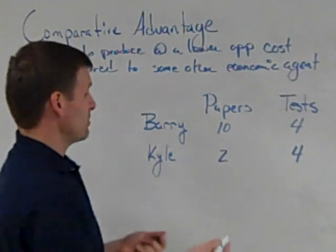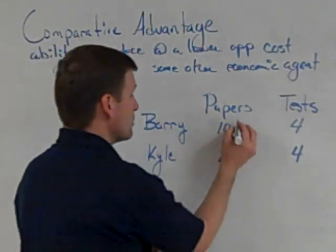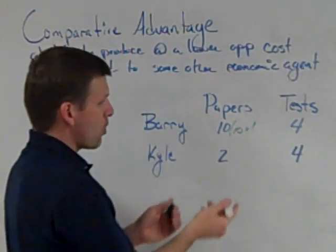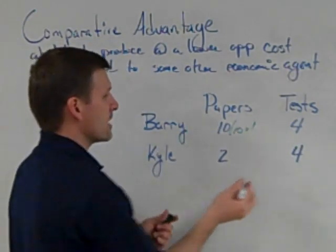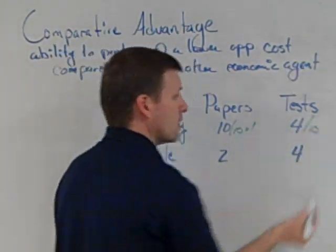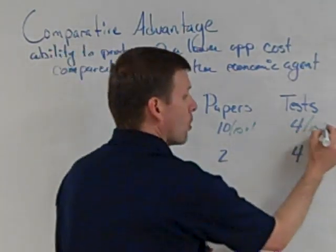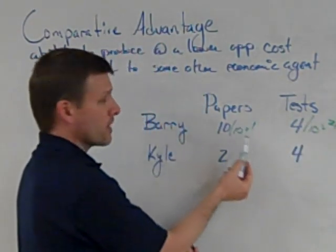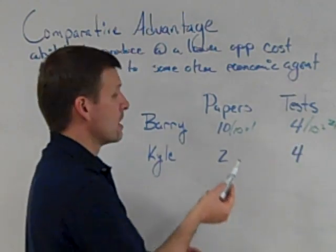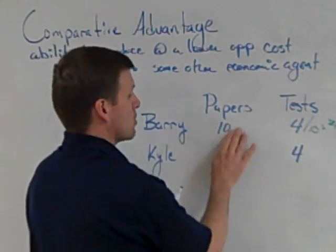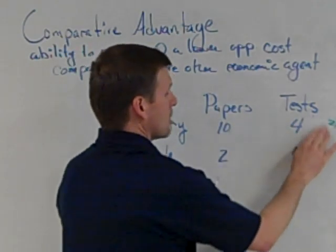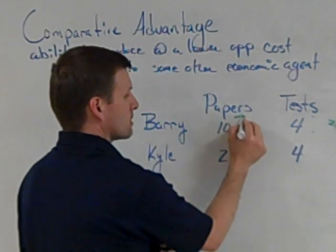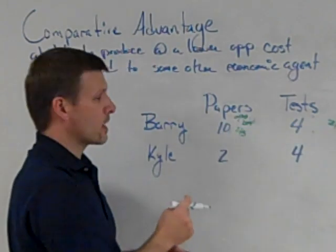Let's simply divide both sides by ten. Ten papers divided by ten equals one. Four tests divided by ten gives four-tenths, or two-fifths. So when Barry writes one paper, he gives up two-fifths of a test. I'm going to write that opportunity cost — two-fifths — right next to the ten. That tells me his opportunity cost when he's grading papers.